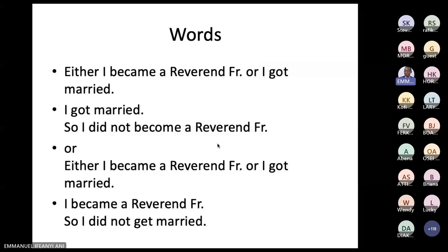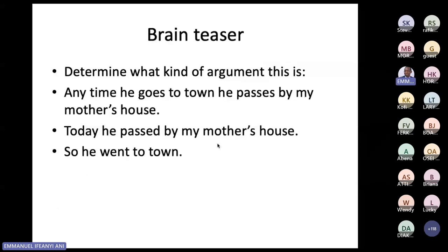A little exercise: determine what kind of argument this is. Premise one: any time he goes to town, he passes by my mother's house. Premise two: today he passed by my mother's house. Conclusion: so he went to town. Break this argument down — convert it into symbols if you like — work it out and find out what kind of argument it is.